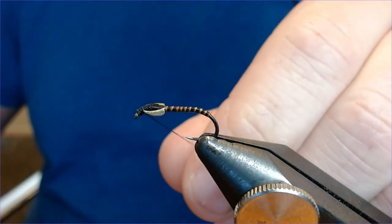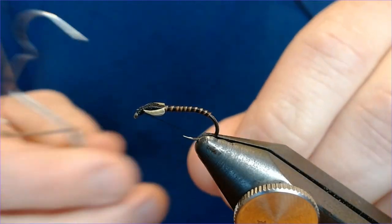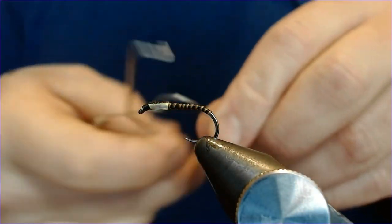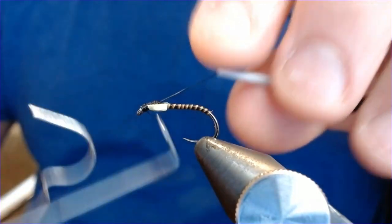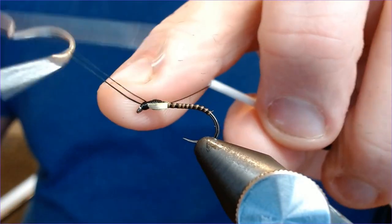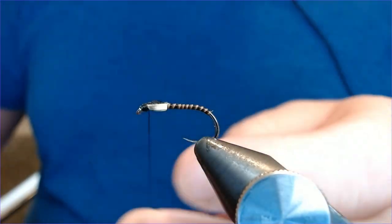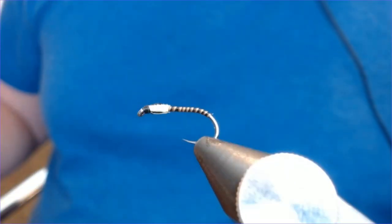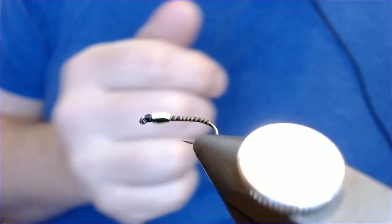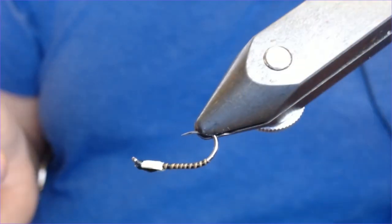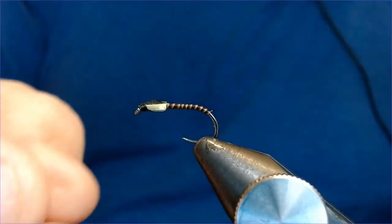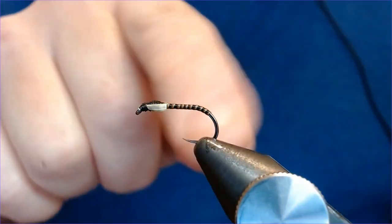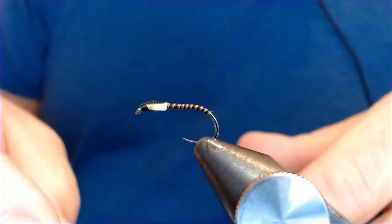We're just going to whip finish this now. Put everything in place, like so. Then trim off the excess. There's your fly. It's a nice easy tie, doesn't take very long at all. Now we need to finish it. This is where the pattern really comes to life. This is Sally Hansen's hard as nails. Love this stuff. You can use all sorts of varnishes and UV stuff, but I still swear by this Sally Hansen's. You get loads for your money with it.